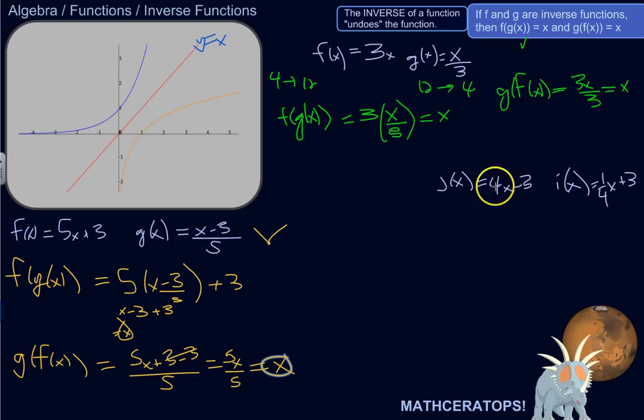Let's try these. j of x is 4x minus 3, and i of x is 1 fourth x plus 3. Looks like they could be inverses, but let's test algebraically. So we'll do j of i of x. And I did, you know, I did this to show. It doesn't matter if you call it f. It doesn't matter if you call it g.